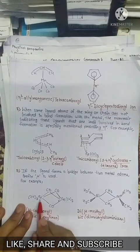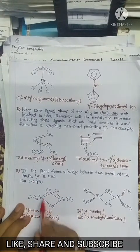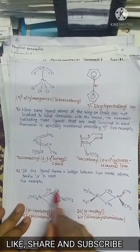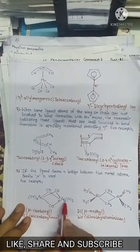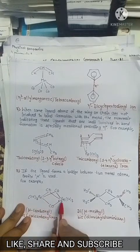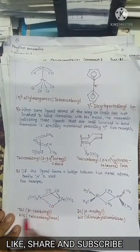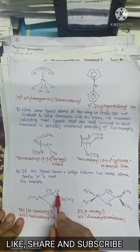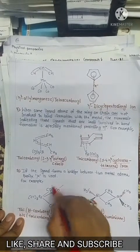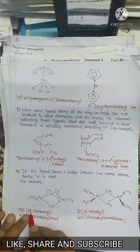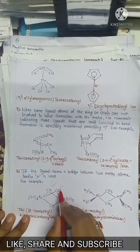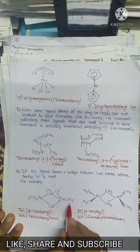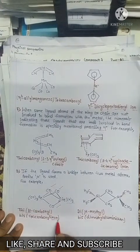If a ligand forms a bridge between two metal atoms, the prefix μ (mu) is used. Just see this example: these two iron atoms are attached to three carbonyl groups which form bridges between them. So the name of this compound is given as tri-μ-carbonyl, where μ indicates bridging ligand and tri indicates there are 3 bridging carbonyls. Then base 2 (indicating 2 metal atoms), tricarbonyl for the terminal carbonyls, and finally iron.